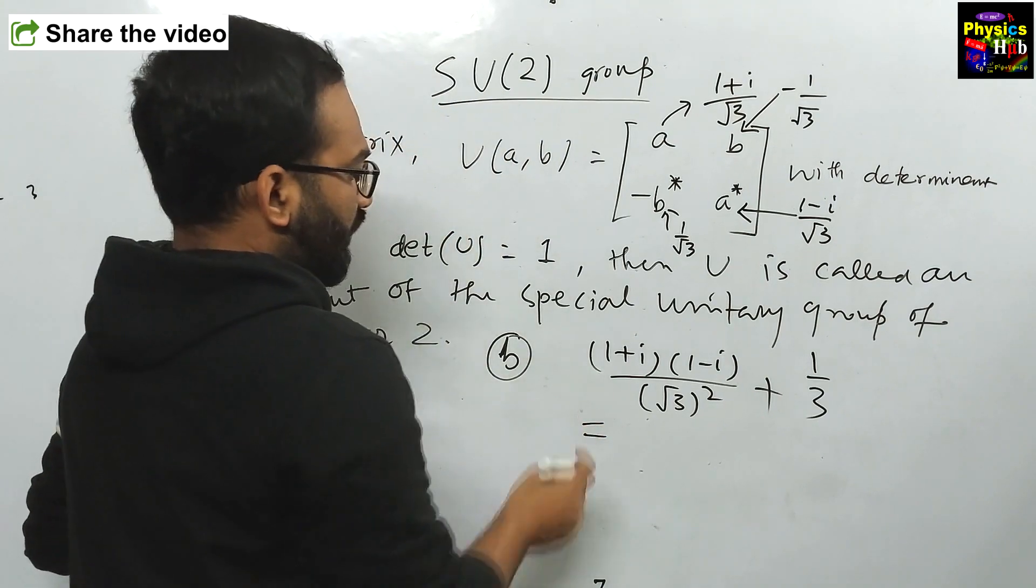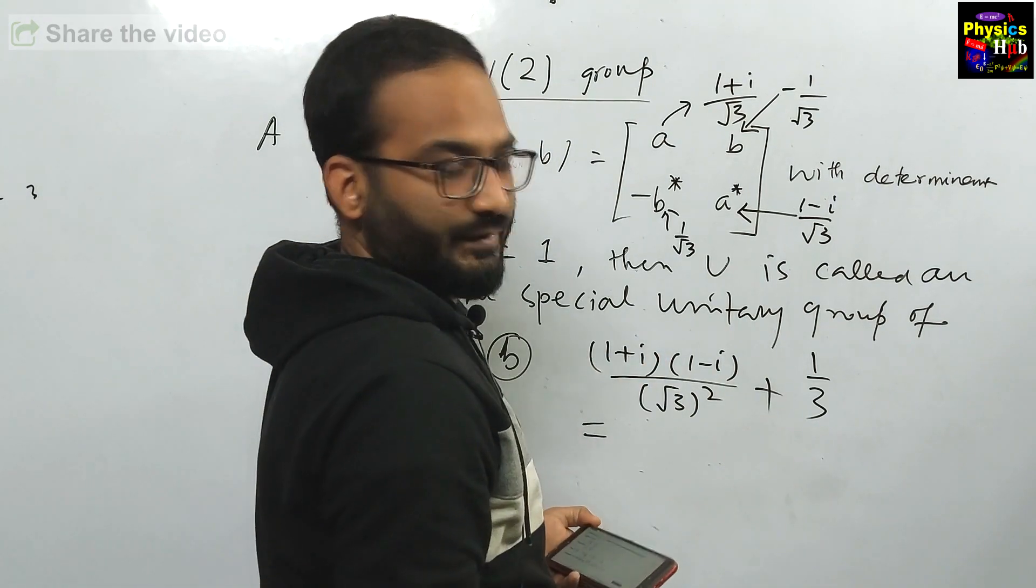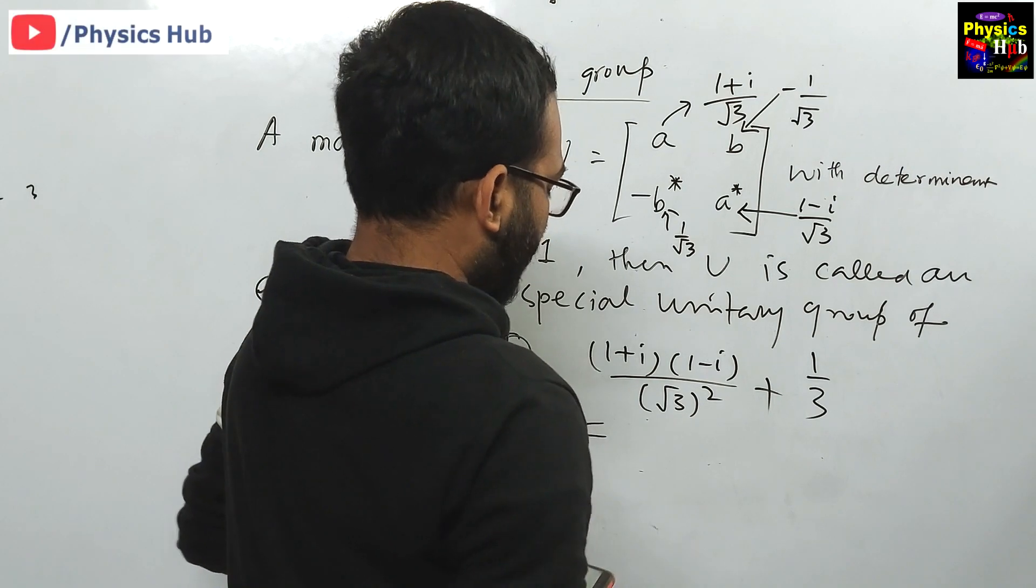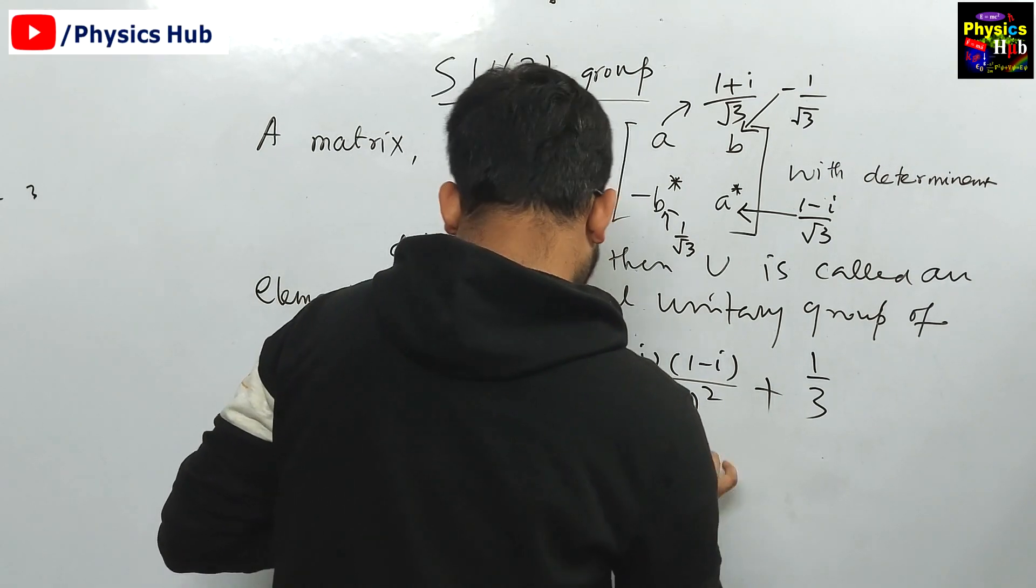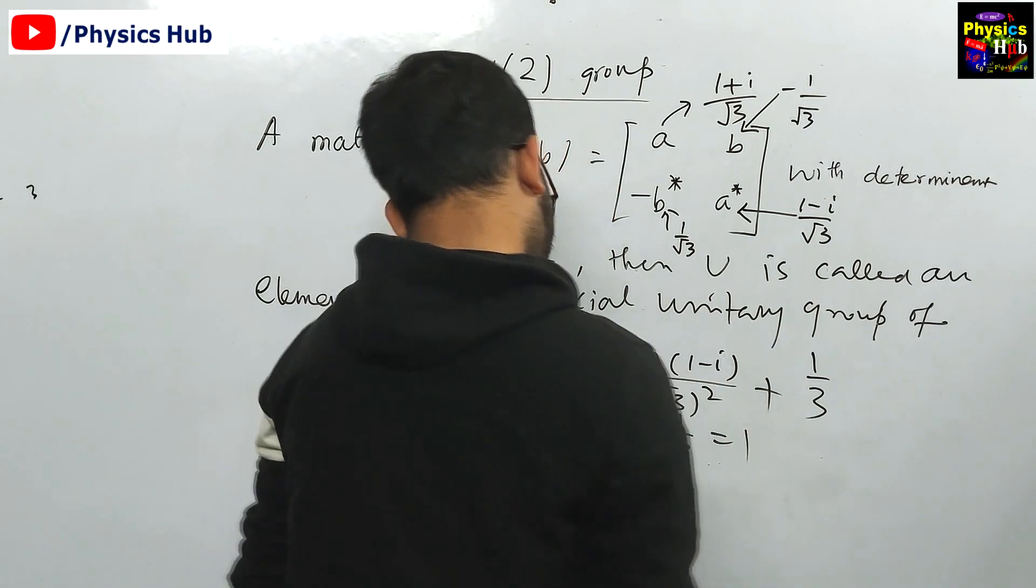So this will produce 1 plus i, 1 minus i, 2 by 3 plus 1 by 3. So that is equals to 1.